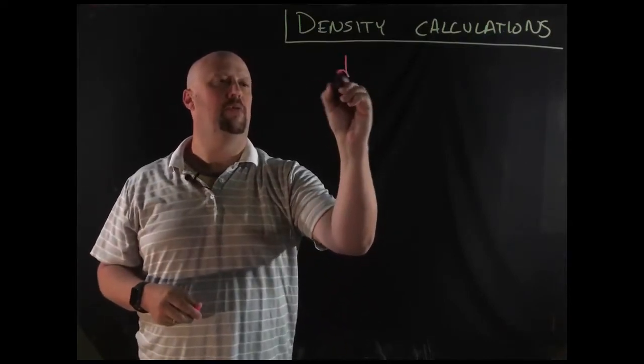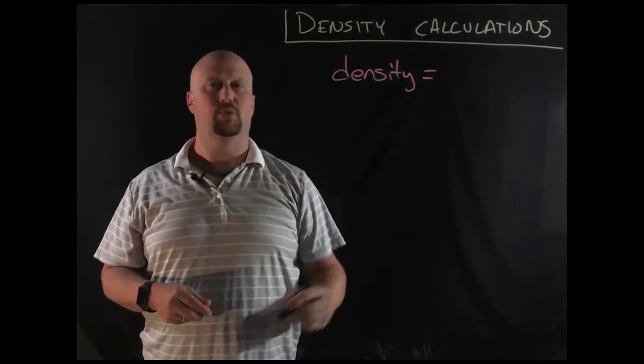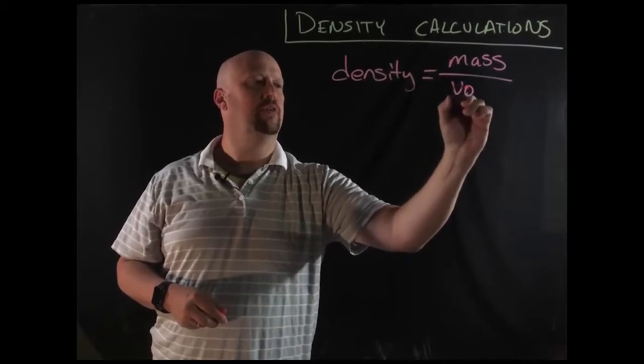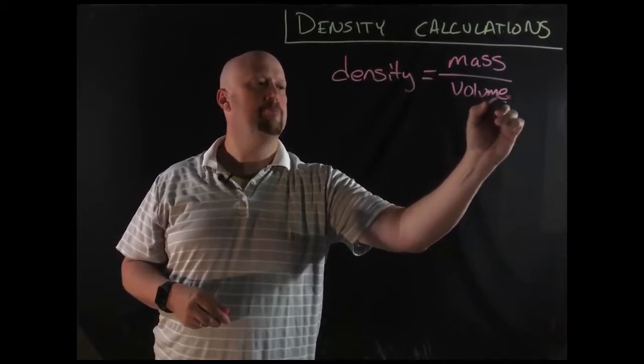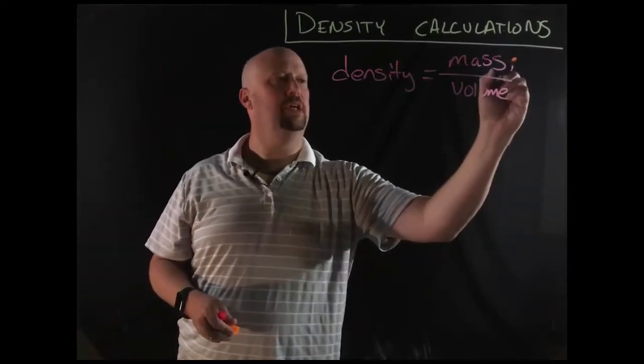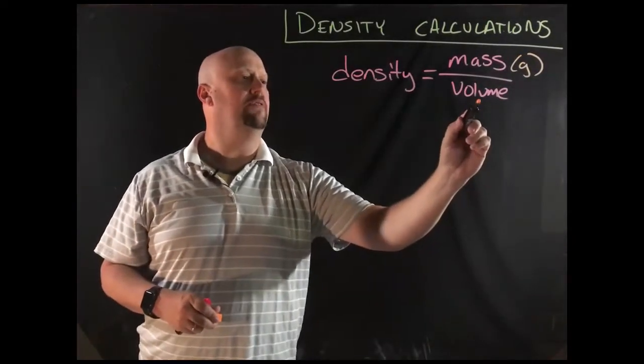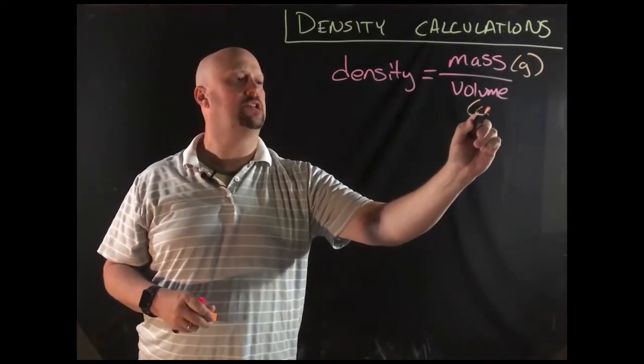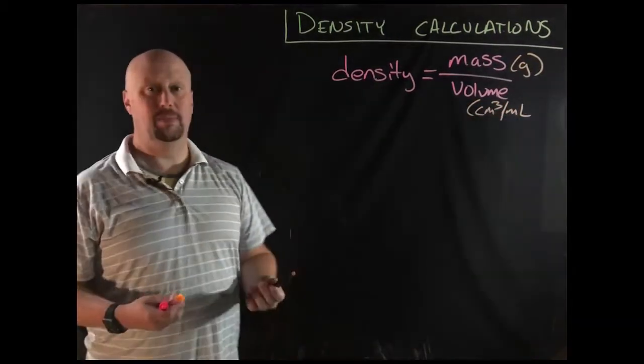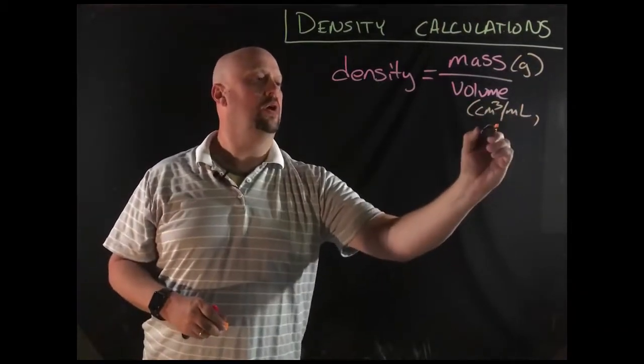So remember that if we're writing the words out, that density is a ratio of mass per unit volume. Now, bringing up units brings up a pretty good point, because what are the units? Well, typically the unit of mass is grams, not always, but typically. And then for volume, it can vary for us. Sometimes it's cubic centimeters or milliliters, which are the same thing, by the way. You can interconvert those pretty simply. Or liters.